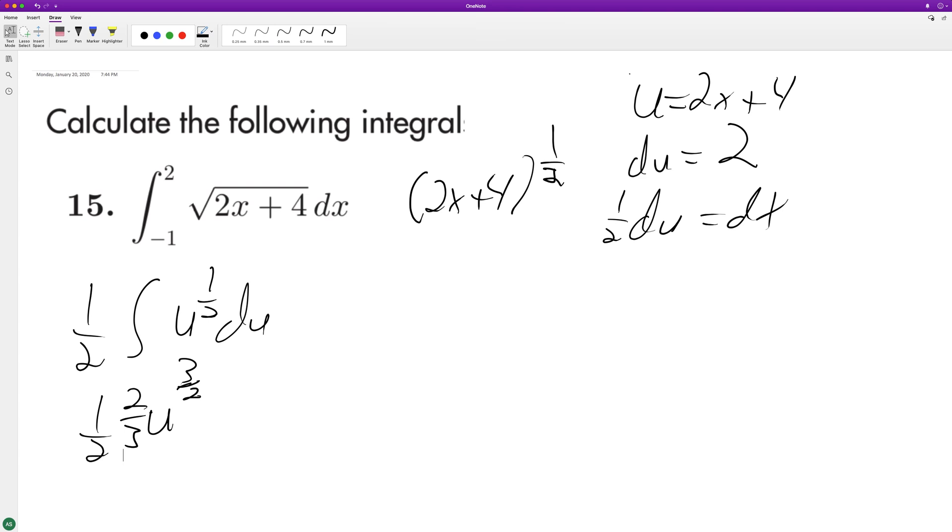I'm missing something here. 2 thirds, 1 half, which is 1 sixth. Something seems off.